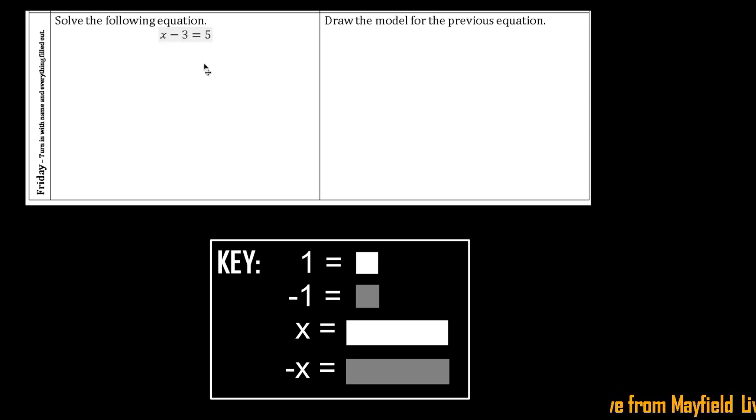Again, you can draw those railroad tracks or the river down the middle, whatever you want to call it. Just trying to show that hey, that equals sign has to stay throughout the entire problem, so you want to make sure that you're balancing this equation.